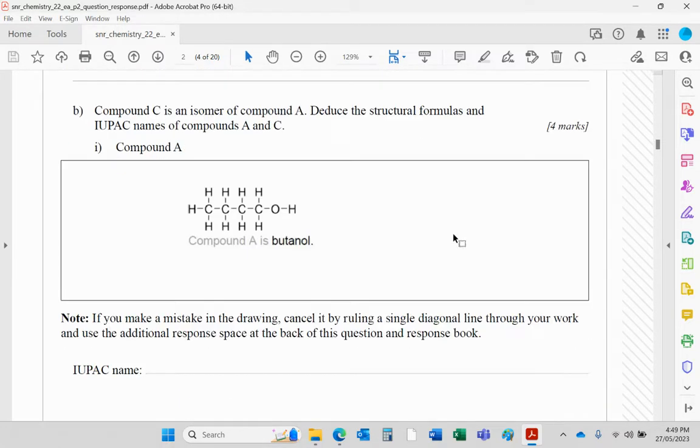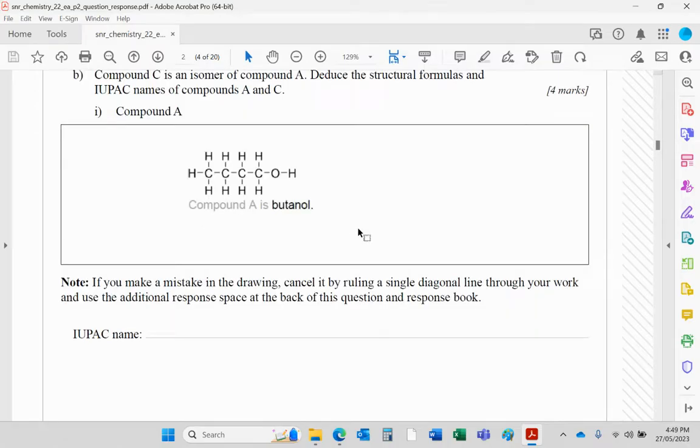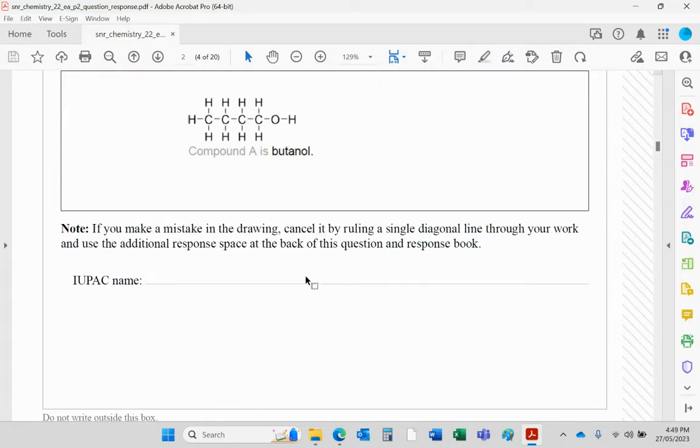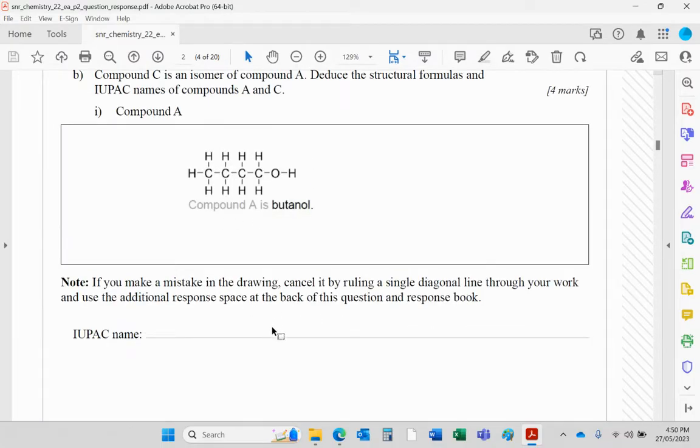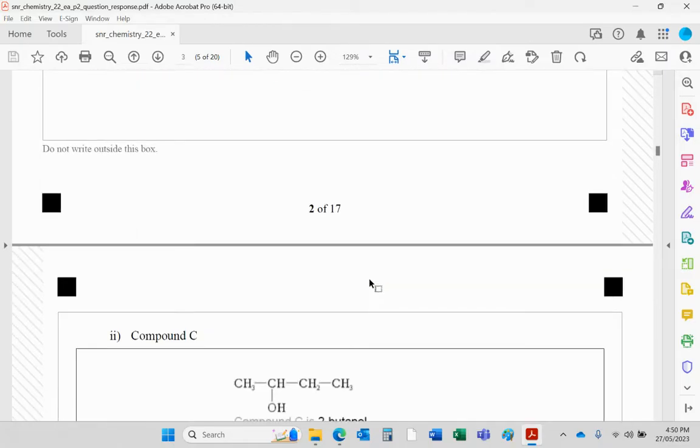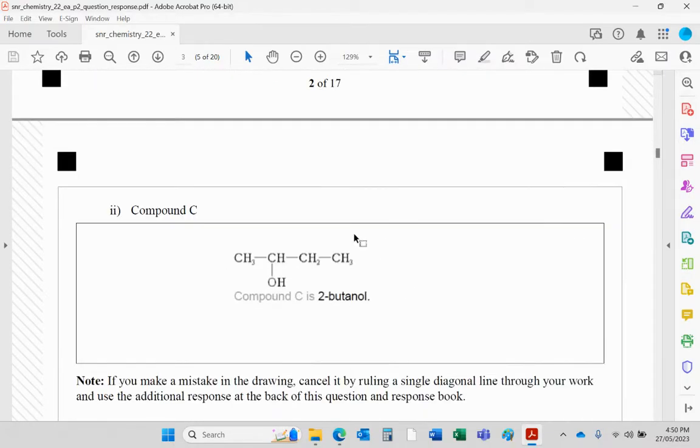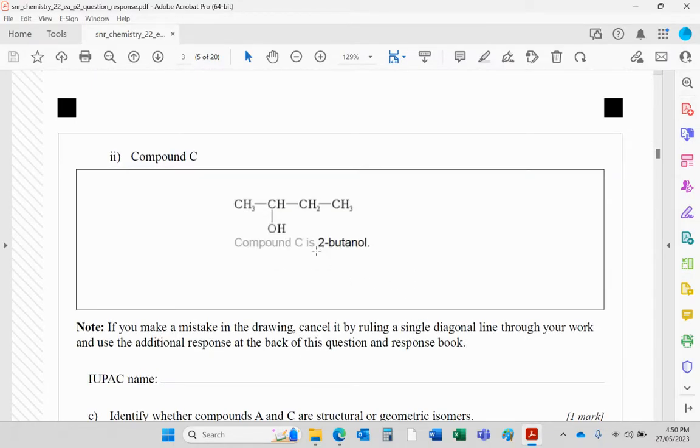So compound A is butan-1-ol. Put the name in there please. I've just copied it from the marking guide. Put it in there please, put the structure in there and the name there. And do the same with this one. Structure there. And there we go, look, 2-butanol. It should be butan-2-ol, but there we go.